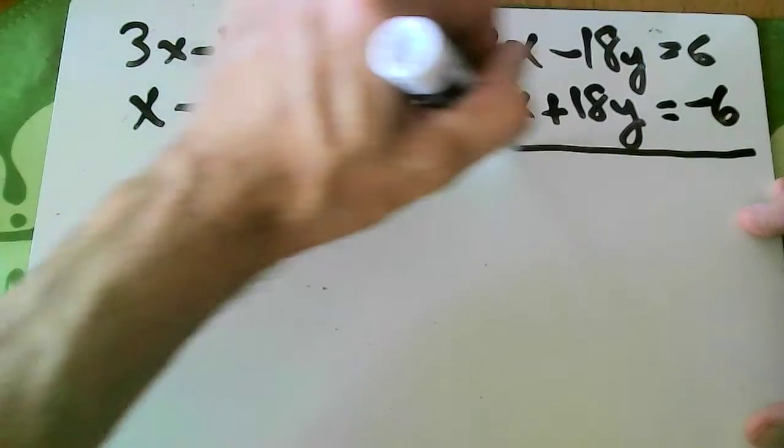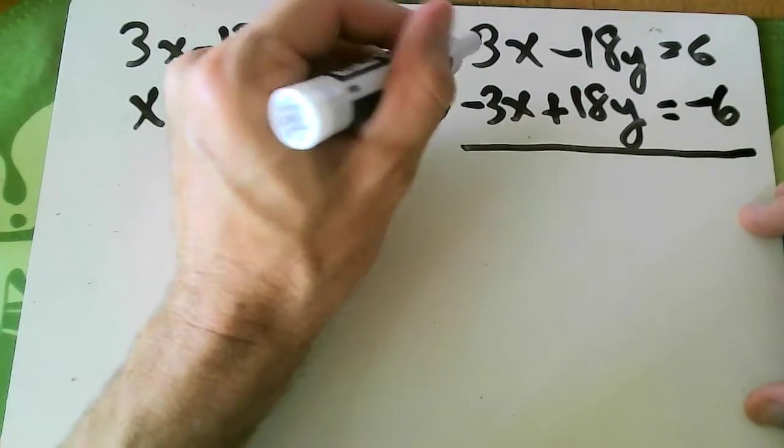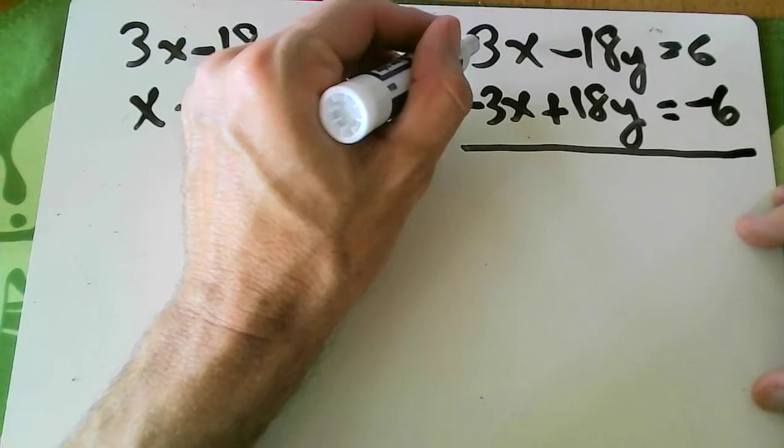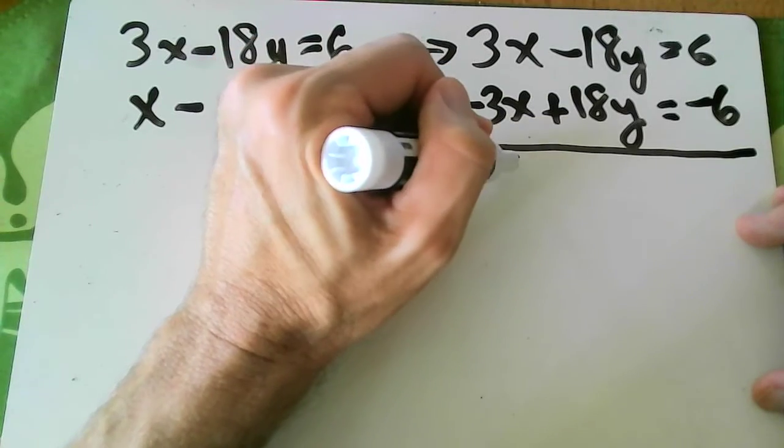And the advantage now is that when I add down, the x's will be eliminated. I get 3x minus 3x is 0.